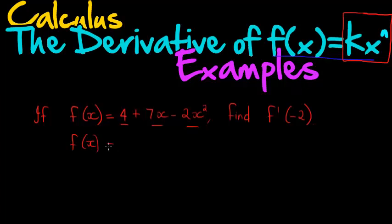So f of x is equal, my coefficient is 4. What is my x? x to the power of 0, because there's actually 4 times 1. Okay, and x to the power of 0 is equal to 1,